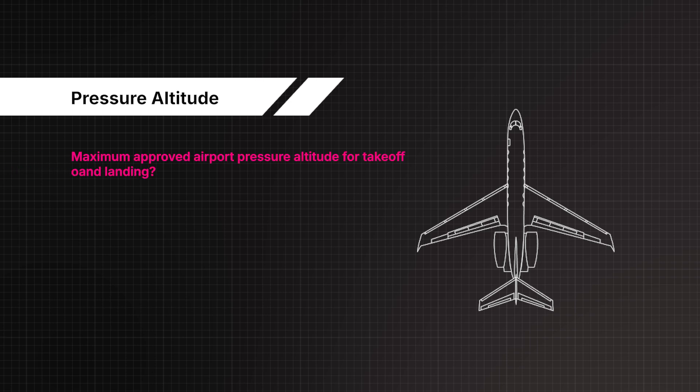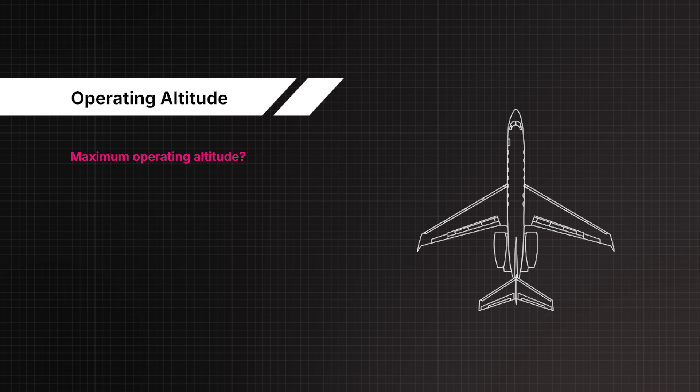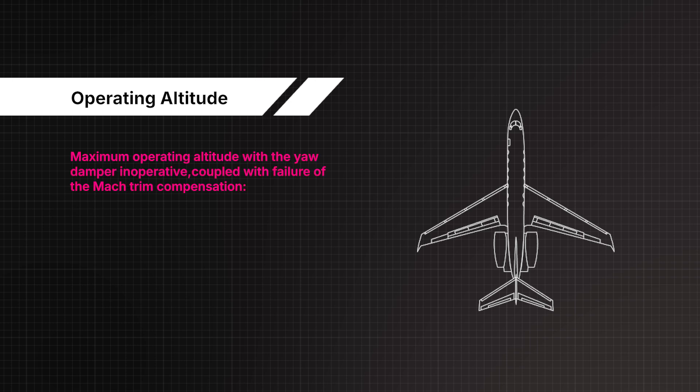Maximum approved airport pressure altitude for take-off or landing: 15,000 feet. Maximum operating altitude: 45,000 feet. Maximum operating altitude with the yaw damper inoperative, coupled with failure of the MAC trim compensation: 41,000 feet.